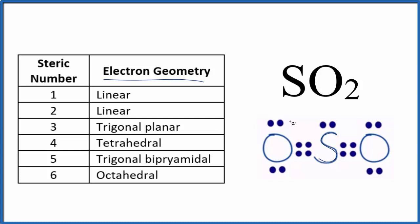So we're talking about the sulfur here. We have one, two atoms, and one lone pair. So one, two, three. That's the steric number. Steric number tells us we'll have a trigonal planar electron geometry.